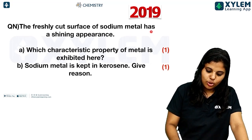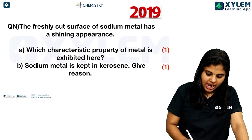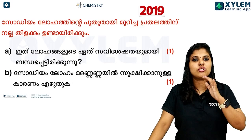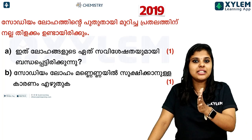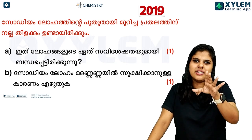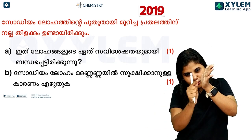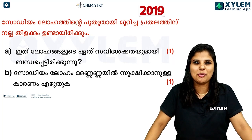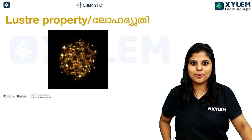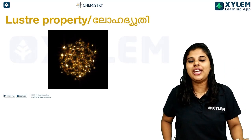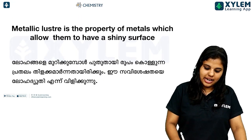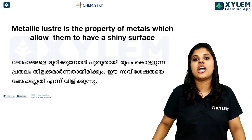Next question: The freshly cut surface of sodium metal has a shining appearance. Which characteristic property of metal is exhibited here? The answer is metallic luster. Metallic luster is the property of metals which allows them to have a shiny surface.